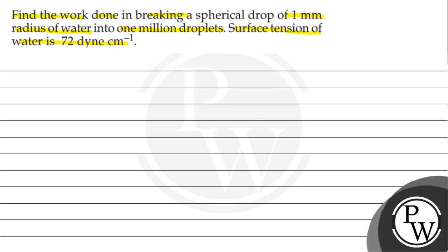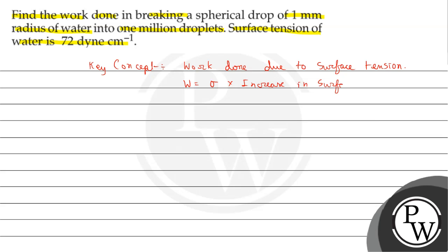So let's see the key concept here. We are using work done due to surface tension, and the relation is given by the formula W equals sigma multiplied by increase in surface area. Here sigma is the surface tension, and the value of sigma equals 72 dynes per centimeter, which we convert into Newton per meter, so we get 72 multiplied by 10 to the power minus 3 Newton per meter. The value of bigger radius R equals 1 mm, which we convert into meters, giving 10 to the power minus 3 meter.